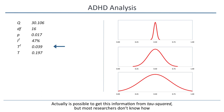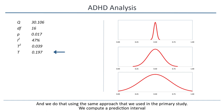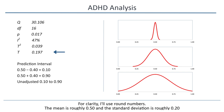And finally, we have tau, which is the standard deviation of true effects. This is the statistic that we actually can use to learn how the effects vary. We do that using the same approach that we used in the primary study: we compute a prediction interval.